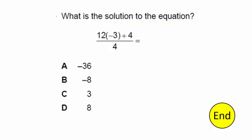What's the solution to the equation? This is order of operations. We have to complete the entire top part before we divide by the bottom number. The 12 with parentheses and negative 3 is an assumed multiply — that is the first thing we do. We multiply before we add, so 12 times negative 3 gives me negative 36. If I add 4 to that, I get negative 32.